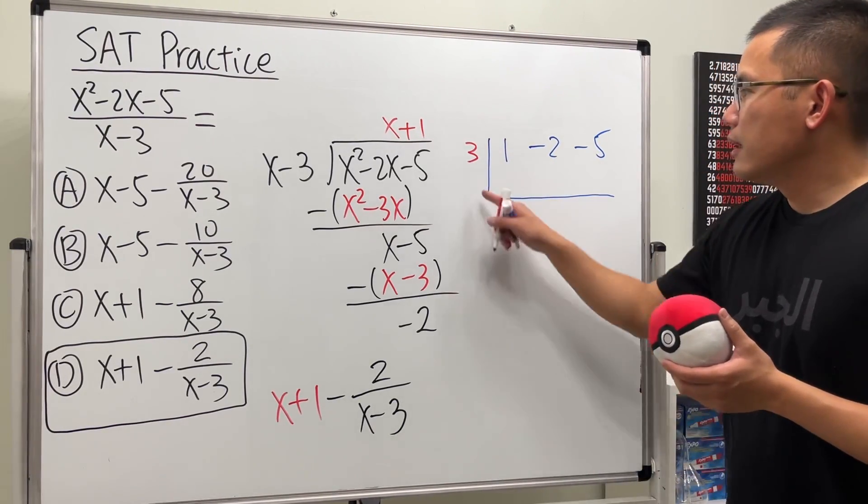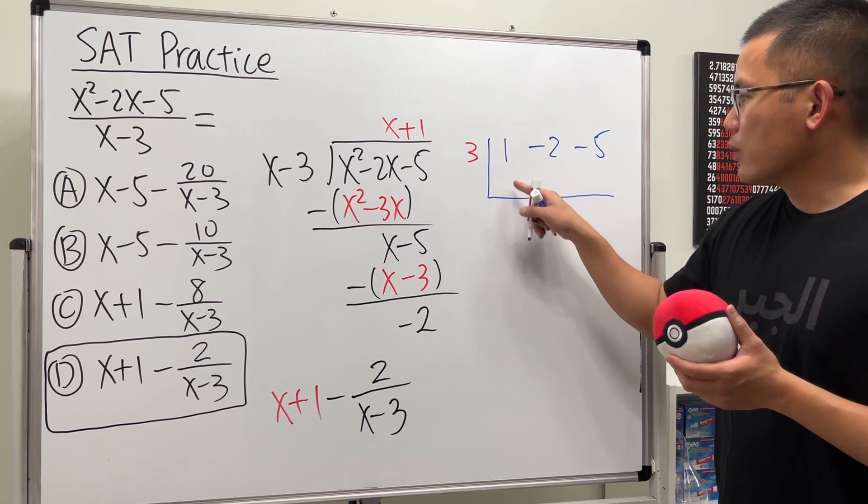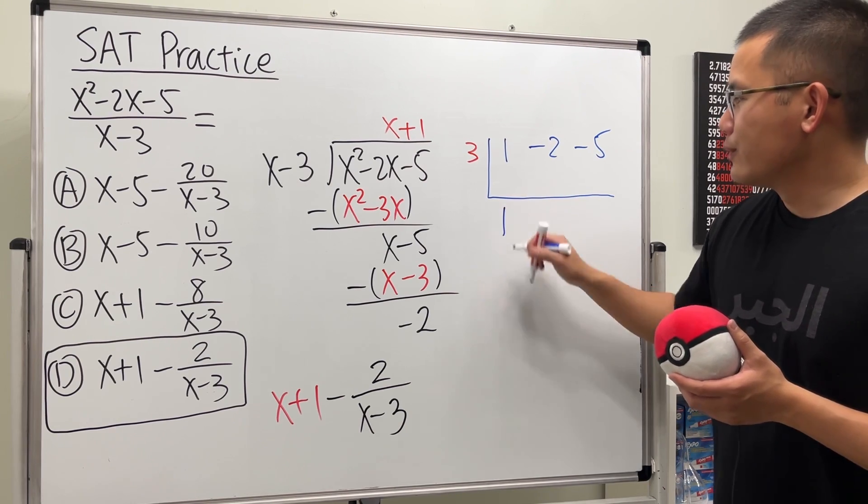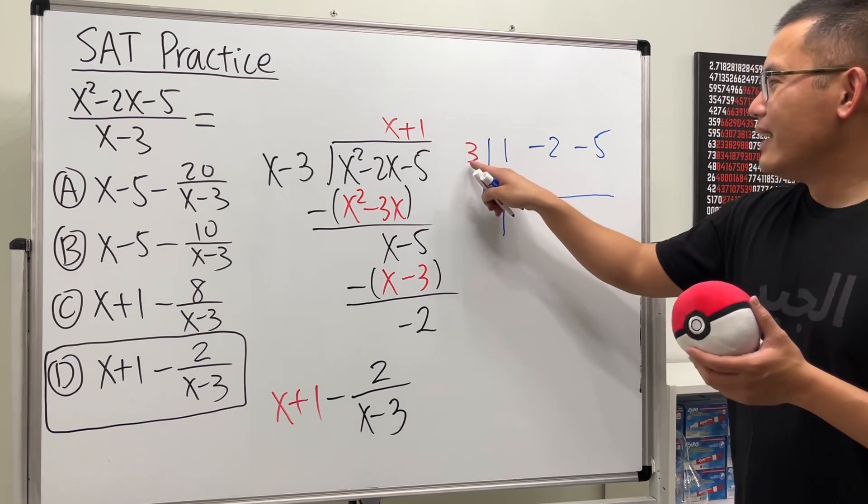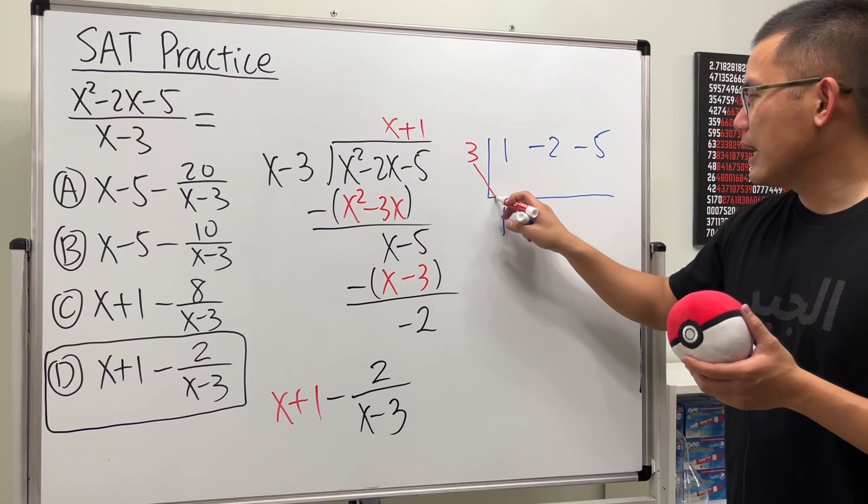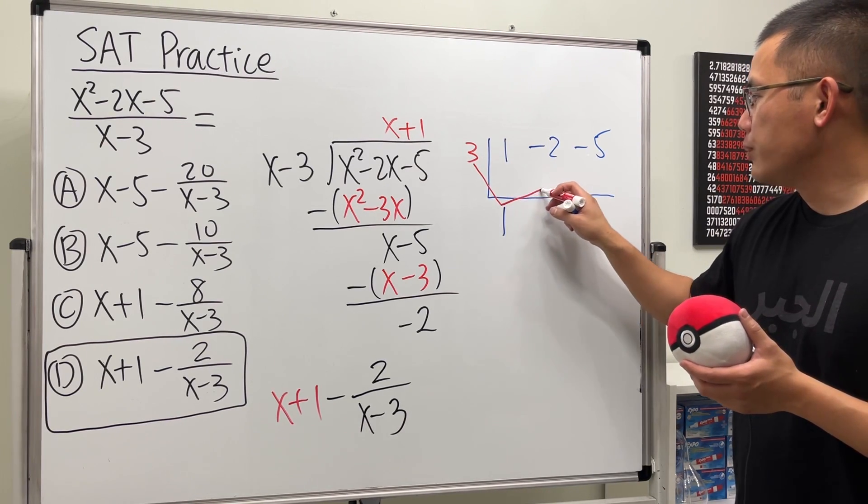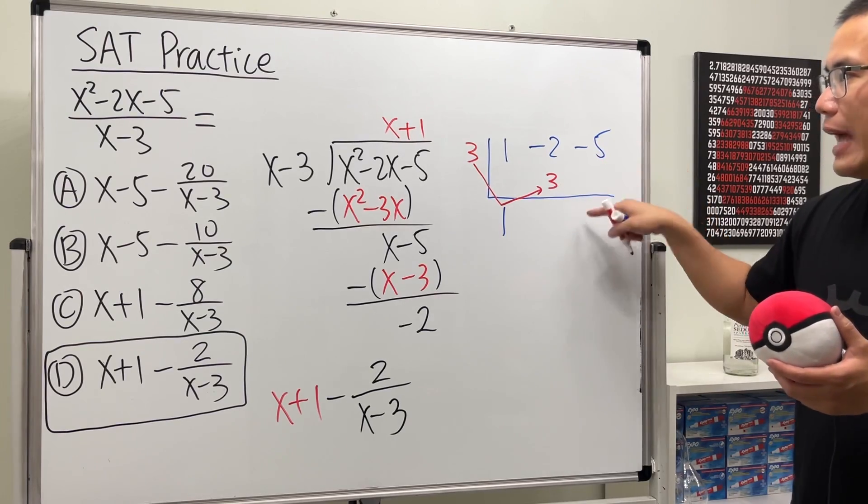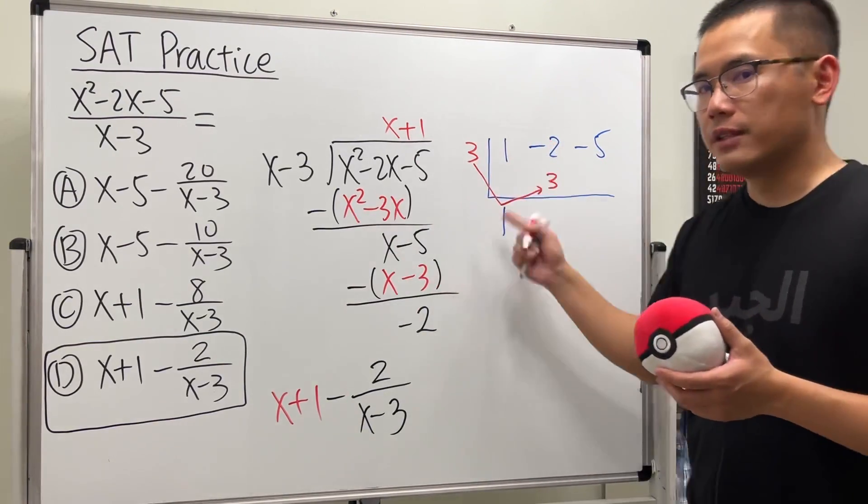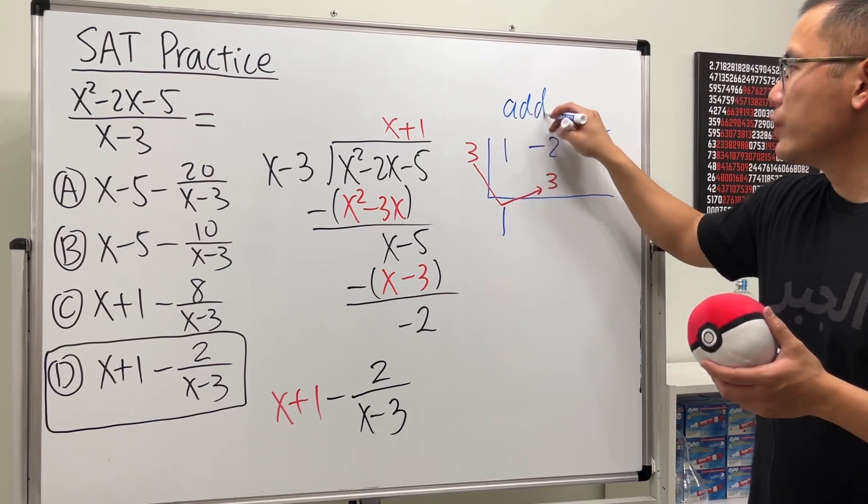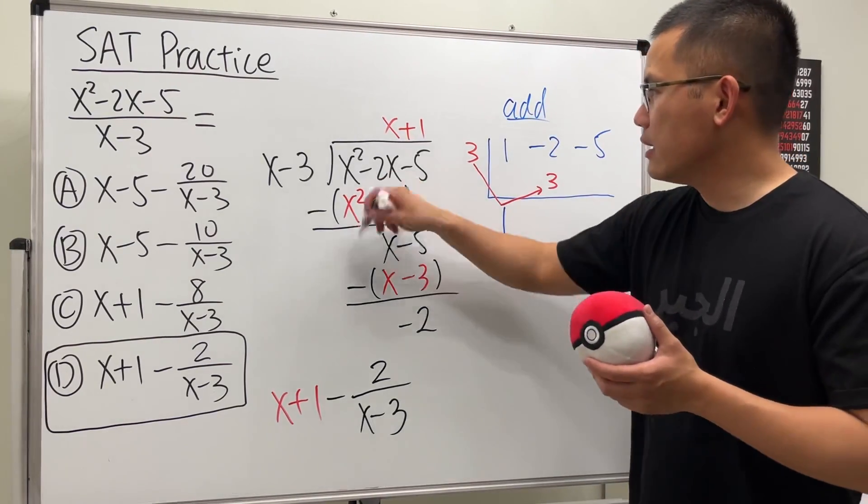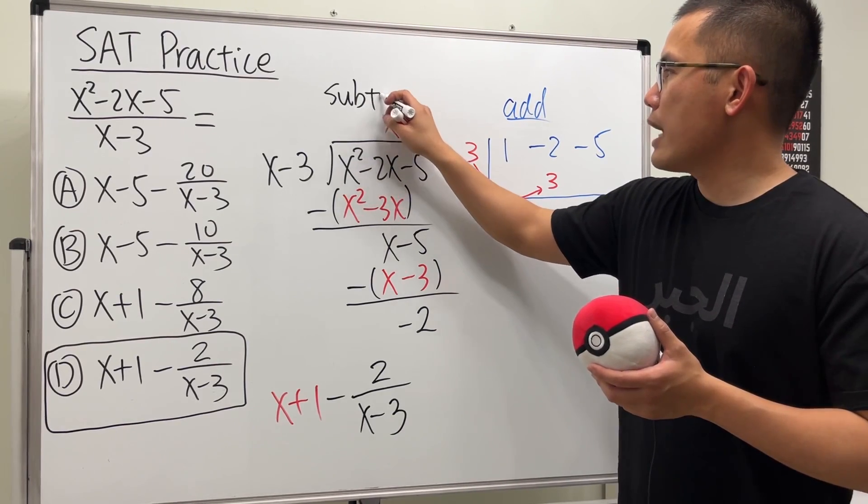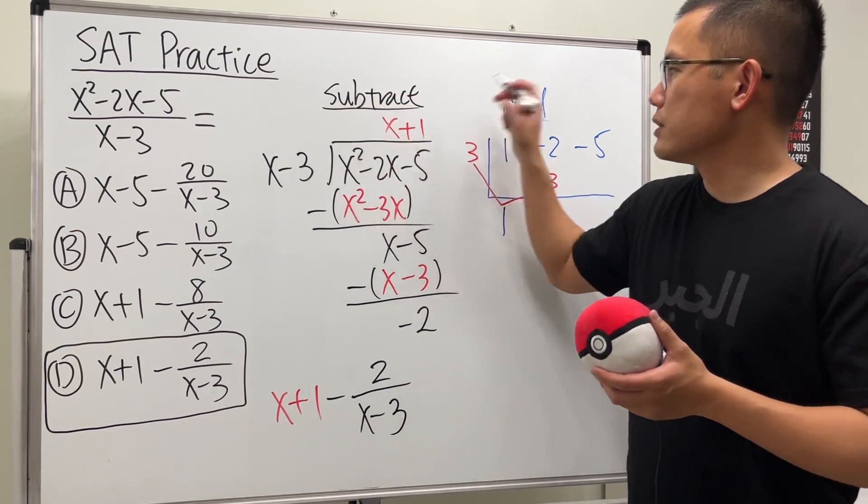And then we are going to do the following. Check this out. First, we bring down the 1. So we have a 1 right here. And let me use blue. All right, what we do next is we do 3 times 1, which is 3, and then we put it here. And then we add. For this right here, we add. Earlier, we subtract, but then for the synthetic division, right here, the process is we add. And again, earlier, for the long division, we subtract. Now, just keep that in mind.